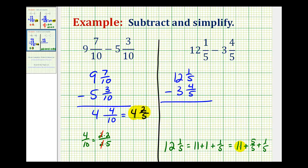So notice how by borrowing 1 from the 12, we can rewrite this as 11 and 6 fifths. So this is the same as 11 and 6 fifths minus 3 and 4 fifths.